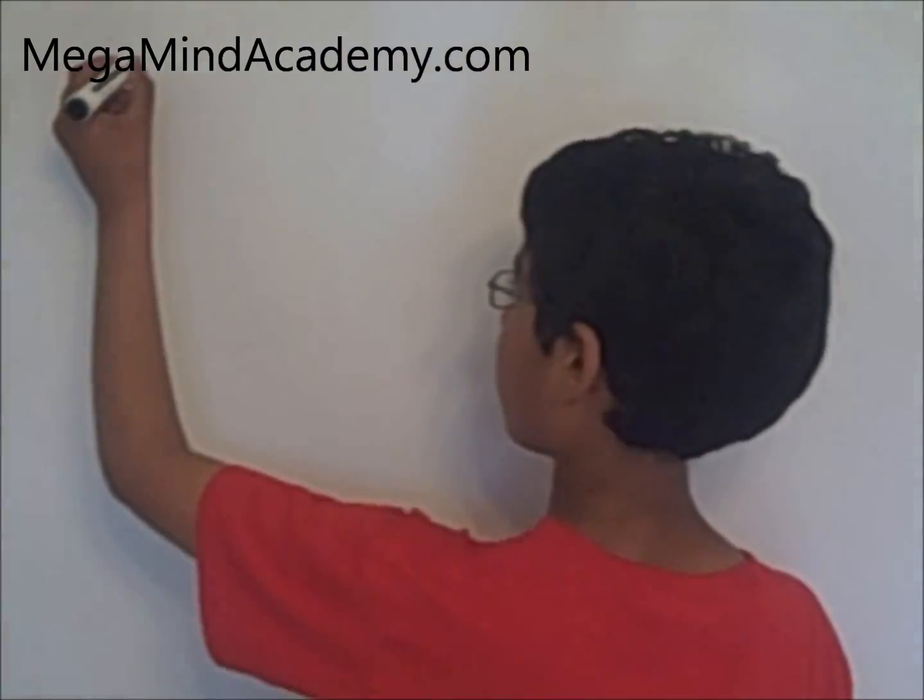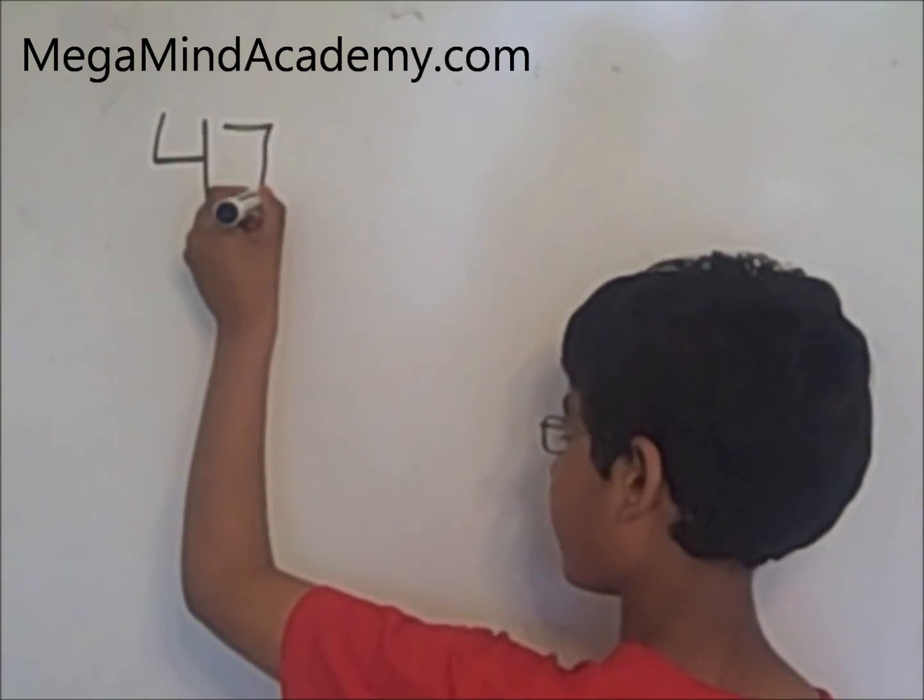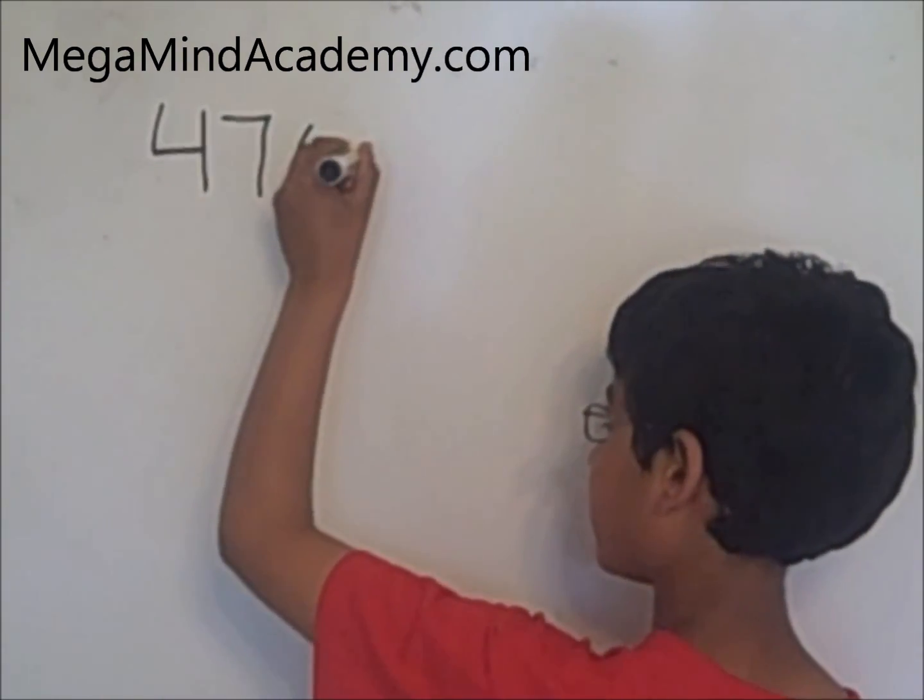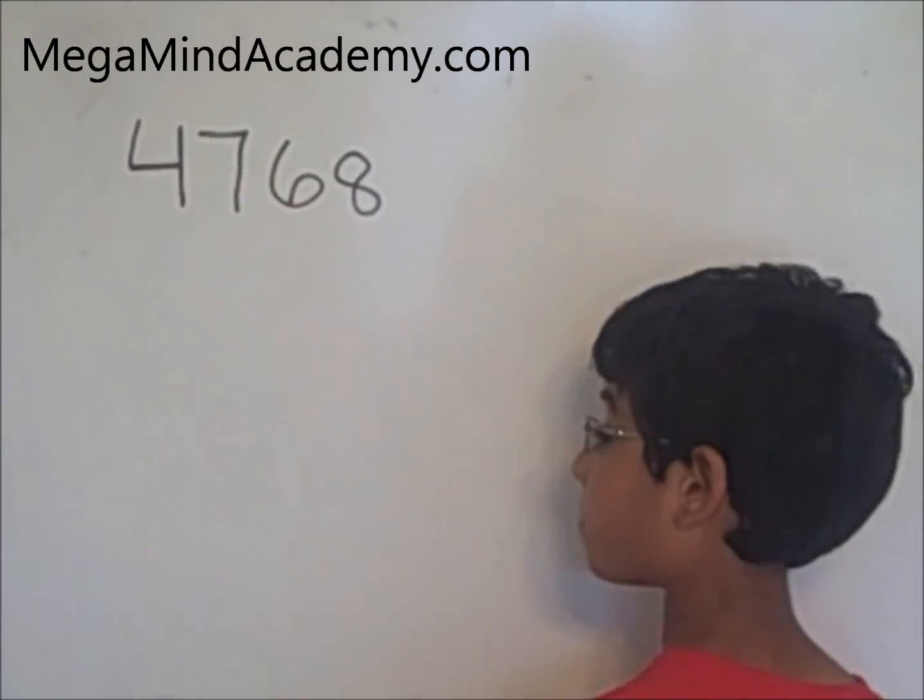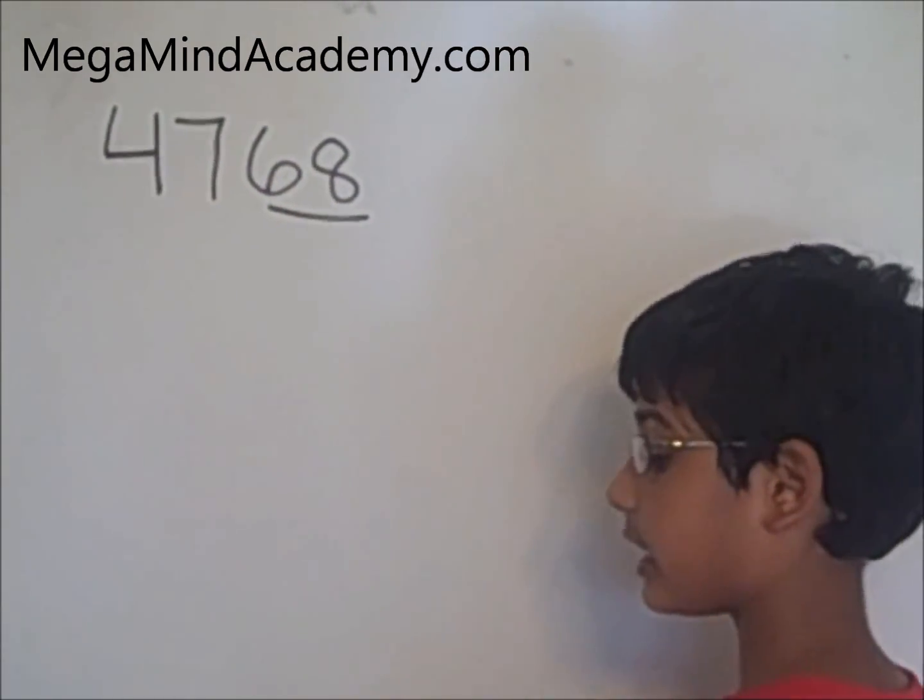Let's see if 4768 is divisible by four equally. 4768. 68 is the last two digits.